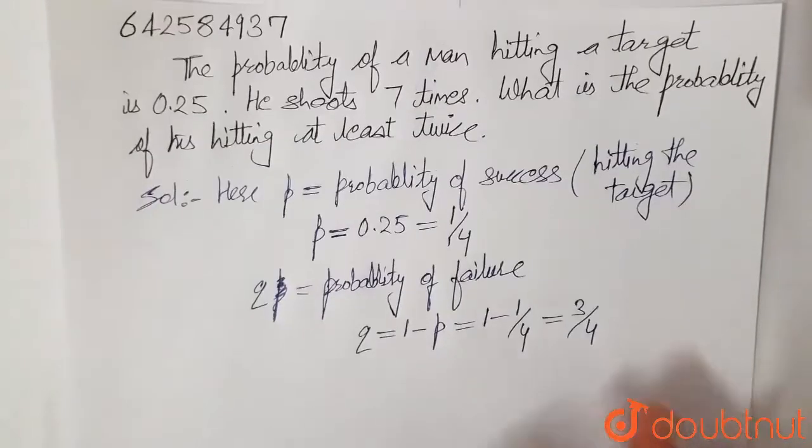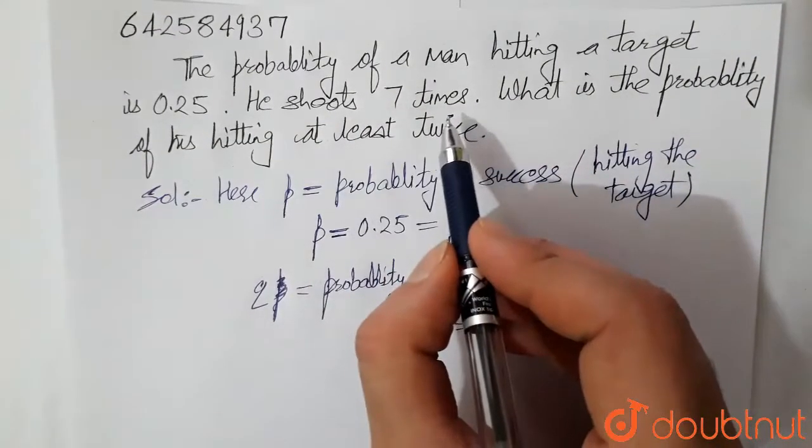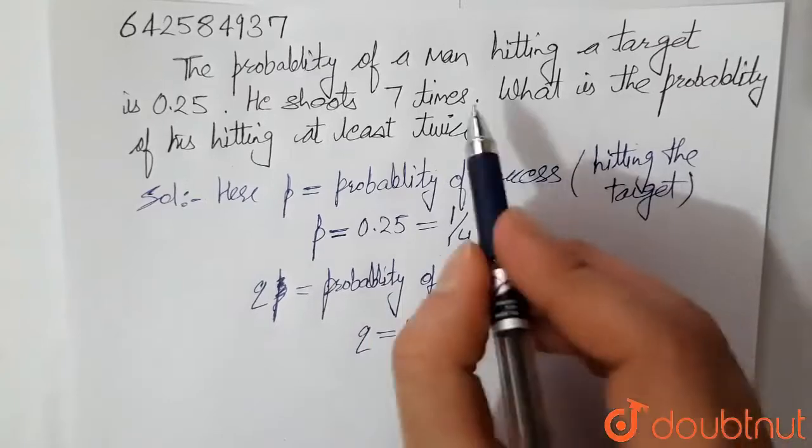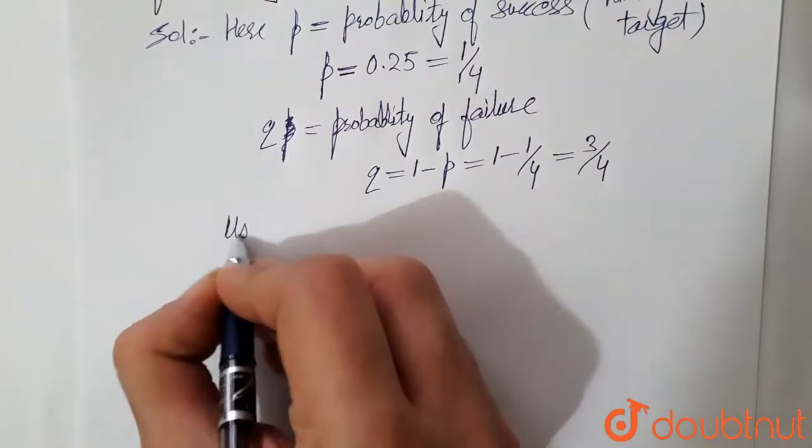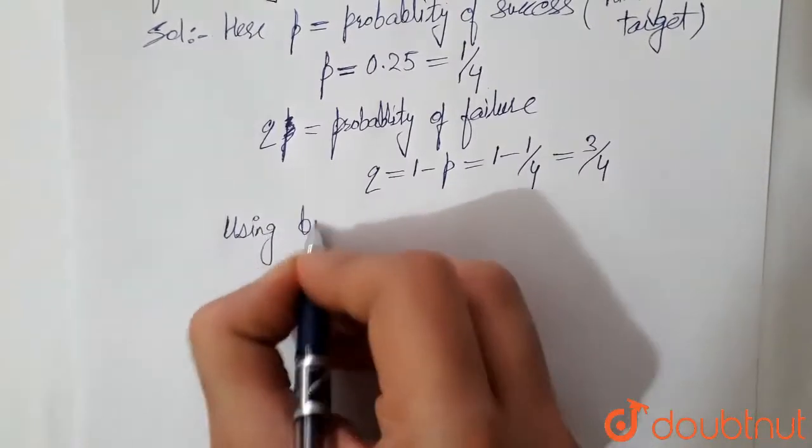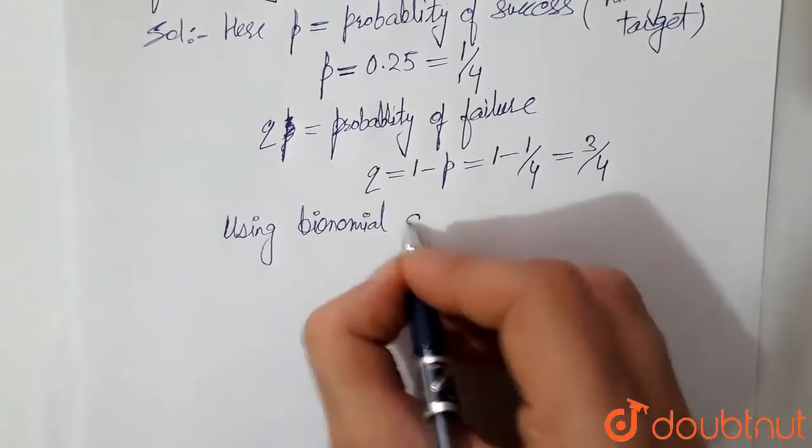Now in this question, it is given that he shoots 7 times and probability of success and failure in each trial is given. So this is case of binomial distribution. Using binomial distribution.